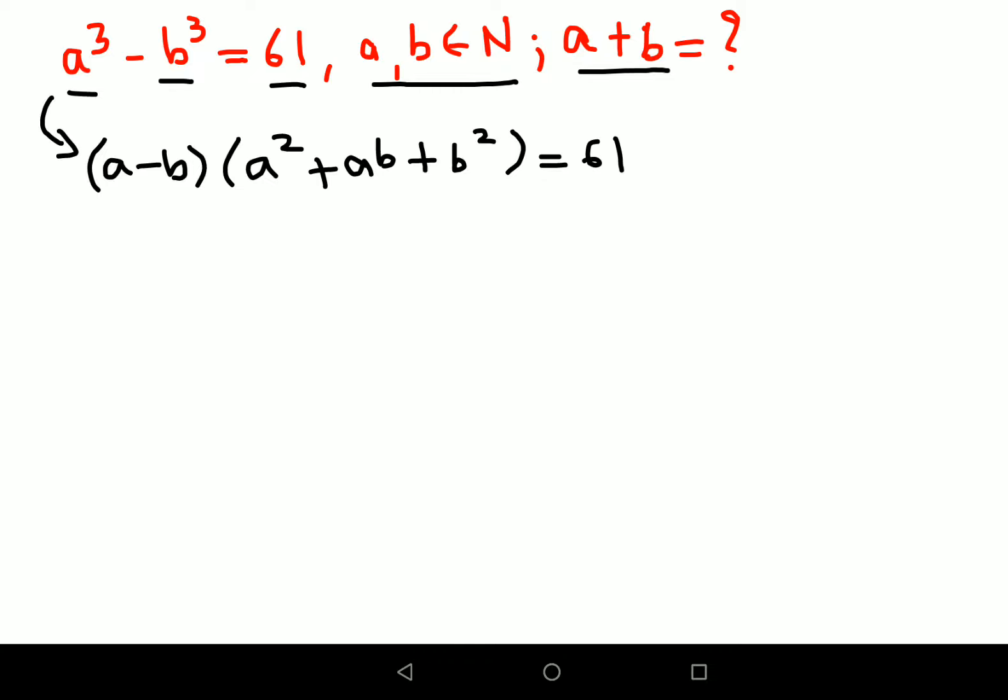After this I am stuck. I am not able to do much. So since on the left hand side I can't do much, let's try and find factors of 61. But now 61 is also a prime number. So you can get either 1 into 61 or 61 into 1.